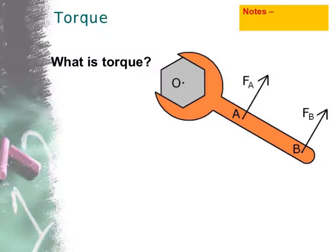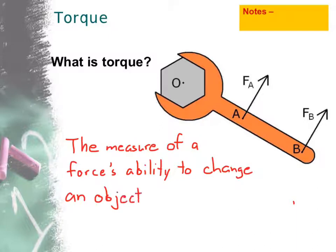If you've already pushed as hard as you can, what you probably figured out from personal experience is that you'd want to go way out here to the end of the handle and push again in this direction, and hopefully you have enough force at this point to start to rotate this bolt in the counterclockwise direction. Torque is the measure of a force's ability to change an object's rotational motion.